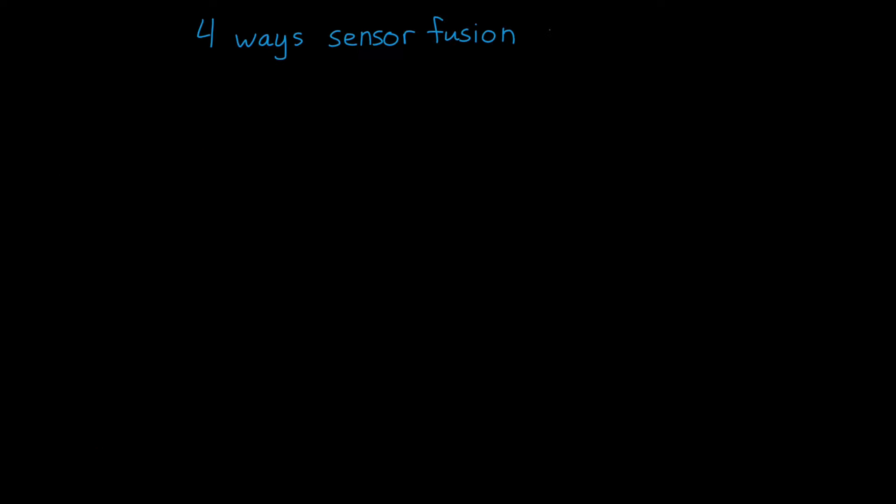So with that in mind, let's walk through four different ways that sensor fusion can help us do a better job at localization and positioning of our own system, as well as detecting and tracking other objects.